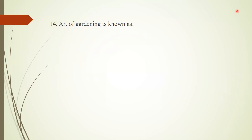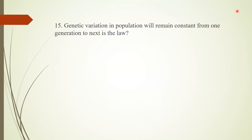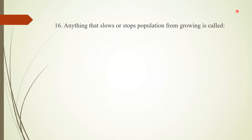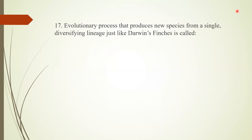Question 12: Initiation of translation in bacteria involves which subunit of the ribosome? Answer: small ribosomal subunit. Question 13: Principles of Population was written by? Answer: Malthus. Question 14: The art of gardening is known as? Answer: horticulture. Question 15: Genetic variation in a population will remain constant from one generation to the next — this is the Hardy-Weinberg law.